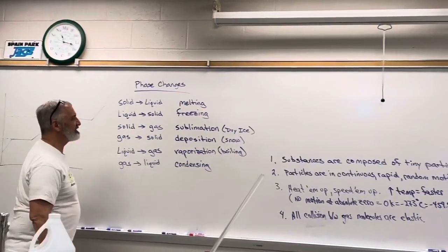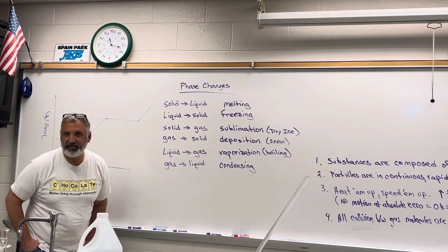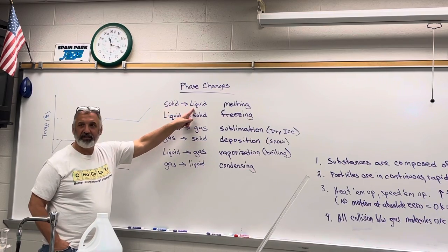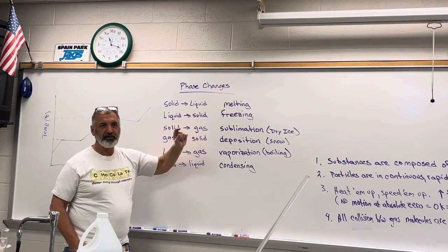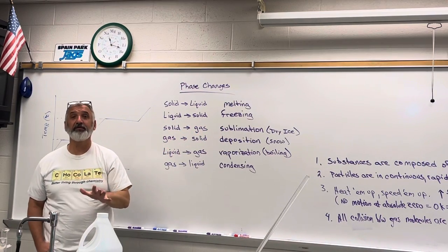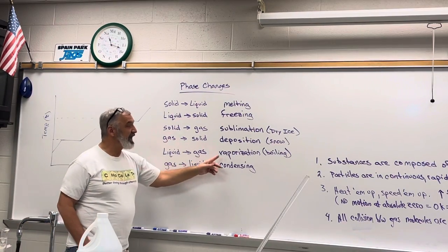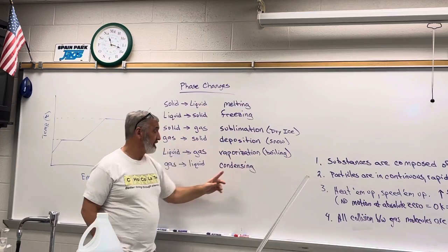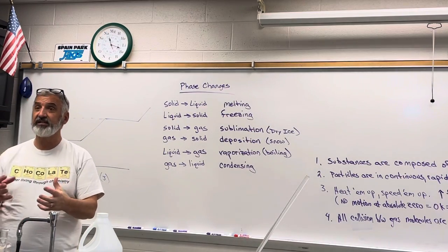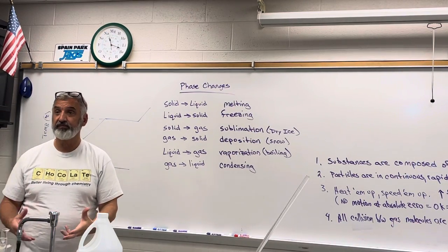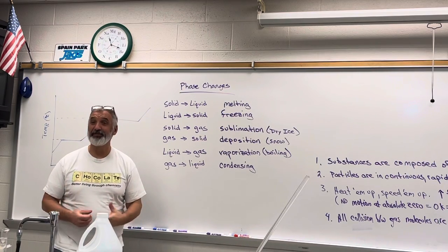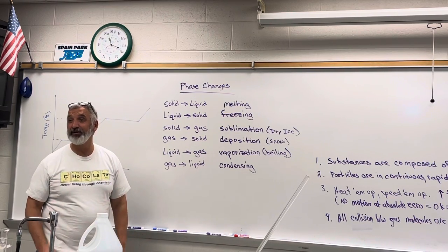We should know the definitions of all our different phase changes. Solid going to a liquid is melting; the reverse is freezing. Liquid to a gas is vaporization, or boiling; gas to a liquid is condensing. That's why a glass of iced tea leaves a condensation ring on a wood table — that's why we have coasters. You put it on something so you don't ruin the expensive table.